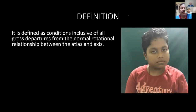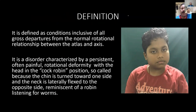Atlanto-axial rotary subluxation is defined as a condition inclusive of all gross departures from the normal rotational relationship between C1 and C2. It is characterized by a persistent and often painful rotational deformity with the head in the 'cock robin' position — as if the chin is turned to one side and the neck is laterally flexed to the opposite side, reminiscent of a robin listening for worms.